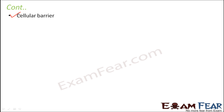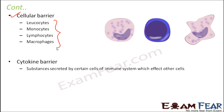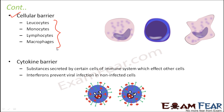The cellular barrier consists of certain cells that themselves act as barriers — leukocytes, monocytes, lymphocytes, and macrophages are cells which help to fight infections. The cytokine barrier involves substances secreted by cells of the immune system that affect other cells. For example, interferons are cytokines that prevent viral infection in non-infected cells, stopping the virus from infecting normal cells.